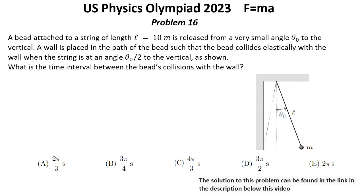A wall is placed in the path of the bead such that the bead collides elastically with the wall when the string is at an angle theta 0 over 2 to the vertical as shown. What is the time interval between the bead's collisions with the wall?